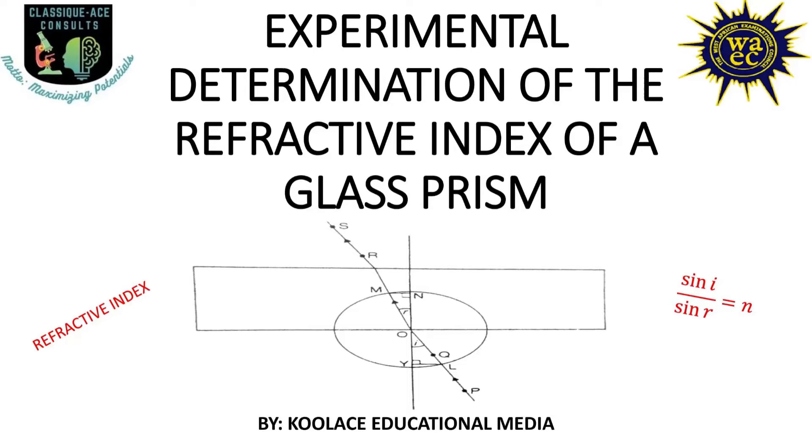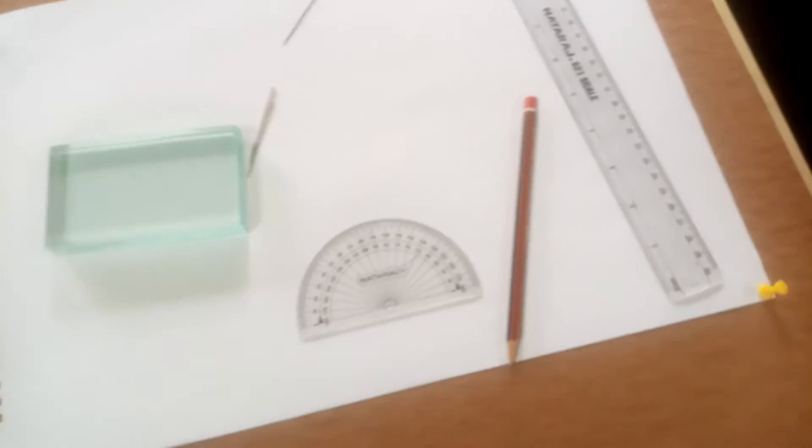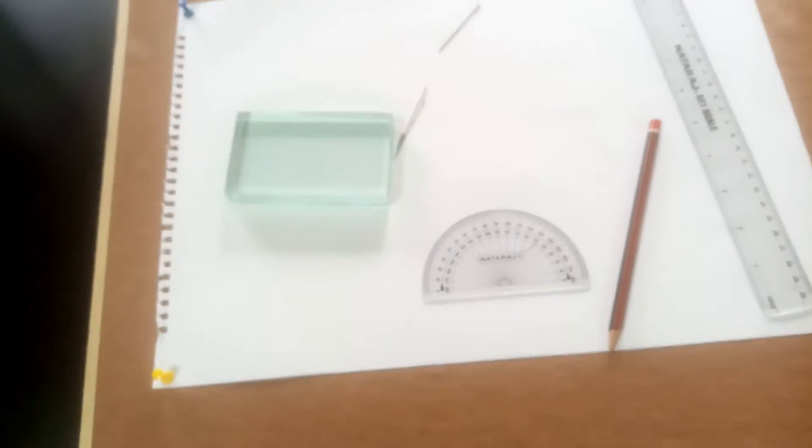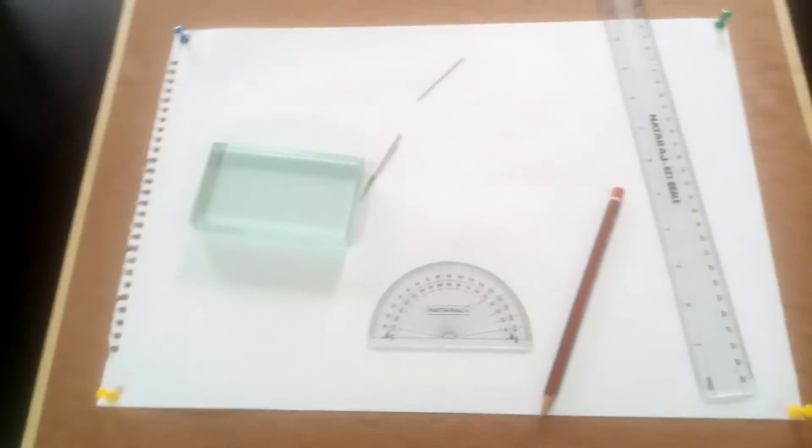Hello guys, welcome back to our class. In this particular class we are going to be conducting an experiment on optics, and our aim is to determine the refractive index of a glass block. Here we have a rectangular glass block and we want to deduce the refractive index of this block. Of course you know by calculation the refractive index of a glass block is around 1.5, so let's see whether at the end of this experiment our value which we are going to get from our slope will be equivalent to that 1.5 or something close to it.